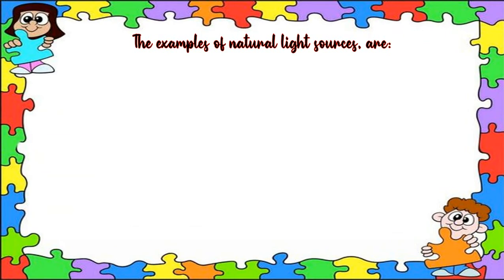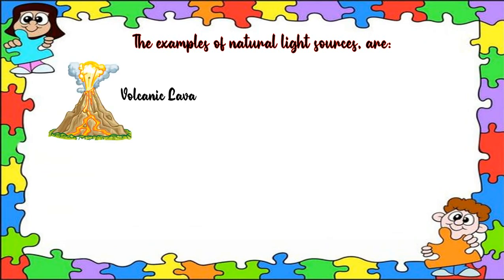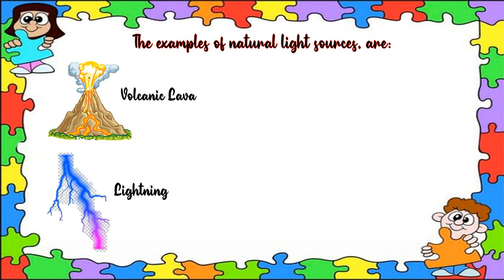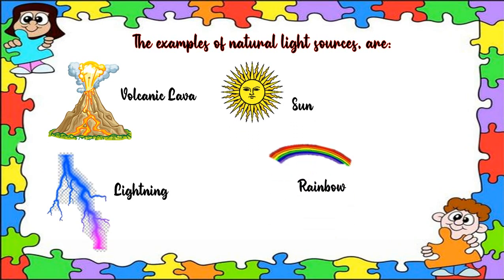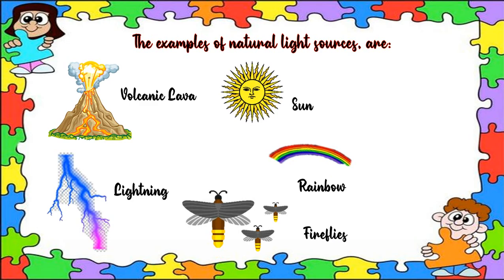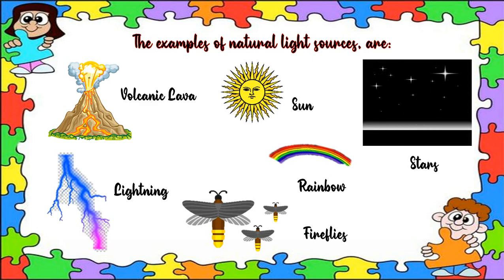Now let's study about the examples of natural light source. The first is volcanic lava. The second is lightning. The third is sun. The fourth is rainbow. The fifth is fireflies — kunang-kunang. And the last is stars. Contoh-contoh sumber cahaya yang berasal dari alam antara lain: lava vulkanik, kilat, matahari, pelangi, kunang-kunang, dan bintang.